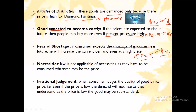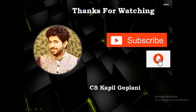Necessities are another exception — goods that are necessary for life. The Law of Demand does not apply here because even if the price is high, you still need to purchase them. For example, medicines: even if prices increase, you have to buy them. Finally, irrational judgment — when a consumer judges the quality of goods by price. If the price is low, they consider the good to be substandard and will not increase demand even if the price is going down. These are all the exceptions to the Law of Demand.